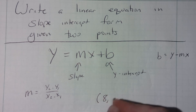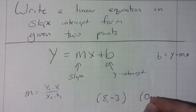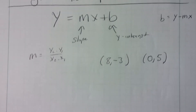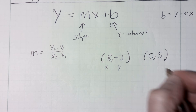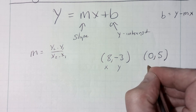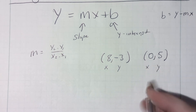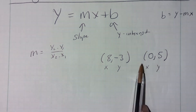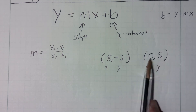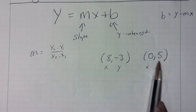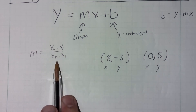We can always hope and pray that one of the two points they give us has the y-intercept in it. Remember, if they give us two points, the first value is an x and the second value is a y. Luckily, they've given us the y-intercept, because if x is zero, then the y that's paired with it is our y-intercept. But we still need to find the slope.